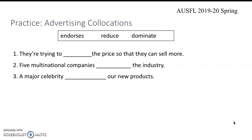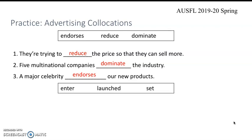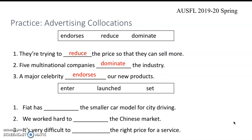Here is a practice to review some of these collocations. Pause the video and complete the sentences with the words in the box. The answers: number 1 is reduce, 2 is dominate, and 3 is endorses. Here is a second group of words — again complete the sentences with the words in the box. Let's check the answers: number 1 is launched, number 2 is enter, and number 3 is set.